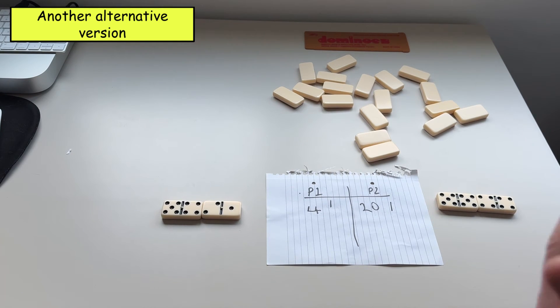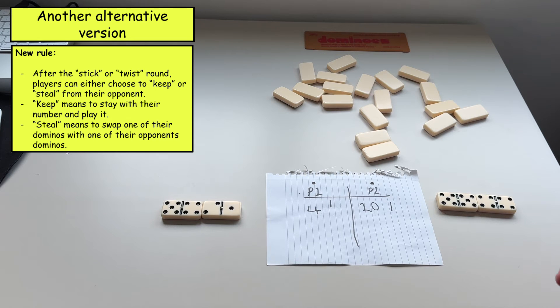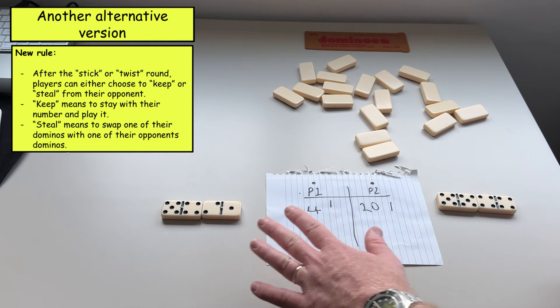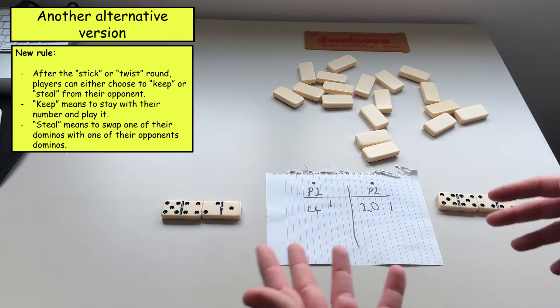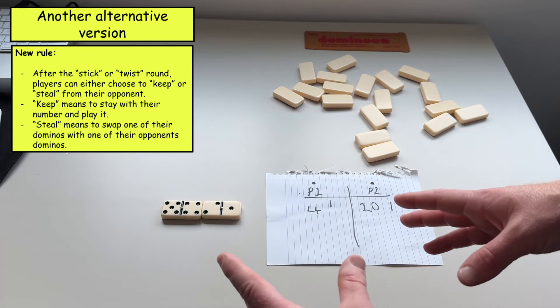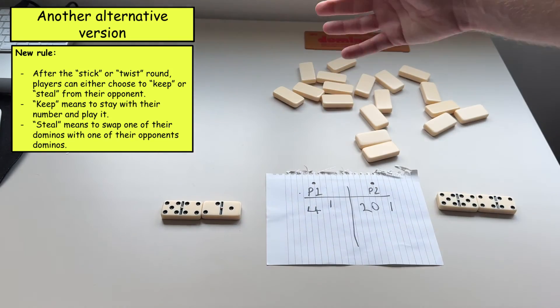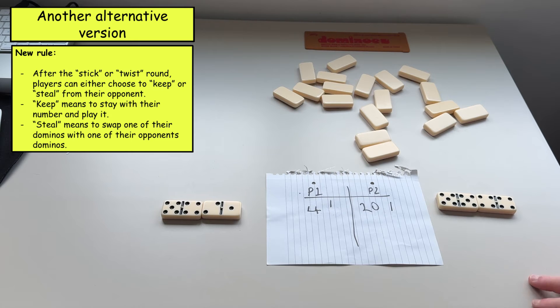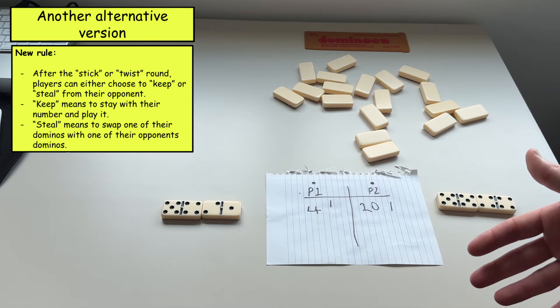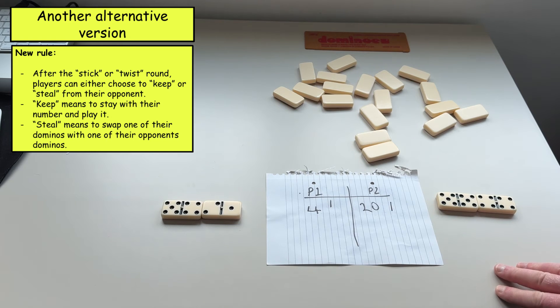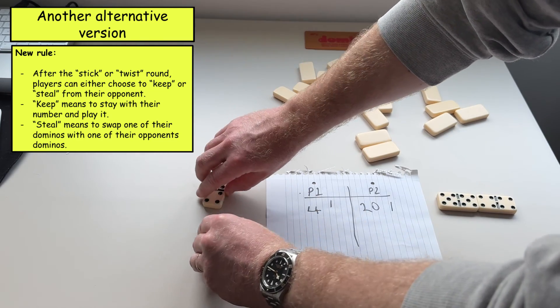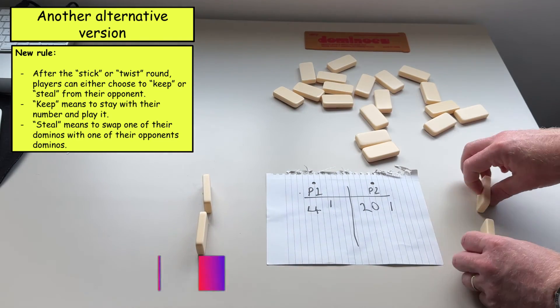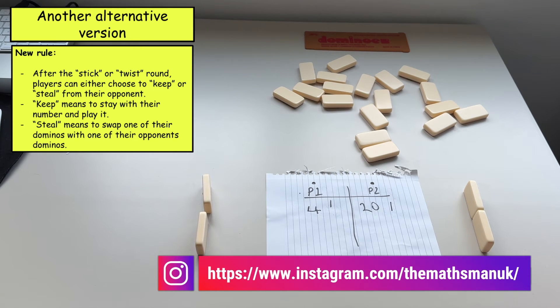So there is actually a third layer to this game that you could introduce to again add some more fun. So let's just imagine that these two players have gone through the first stage where they have made the highest number that they can, this player here decided to twist and take a domino out of the pack. The third stage or the third layer that you could add to this game is stealing. You imagine both players they still haven't showed what number that they have or what dominoes that they have.